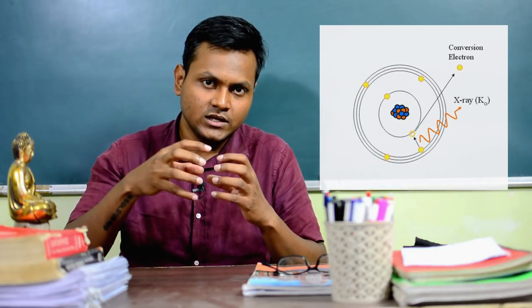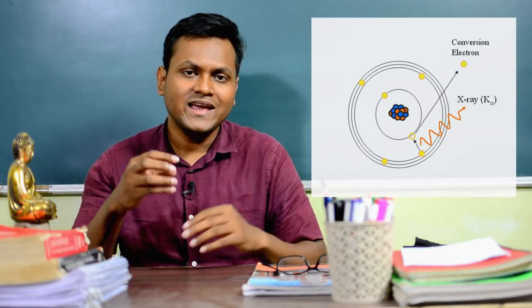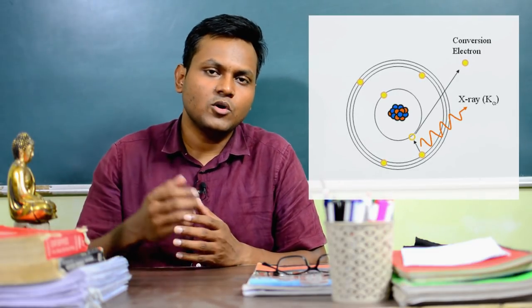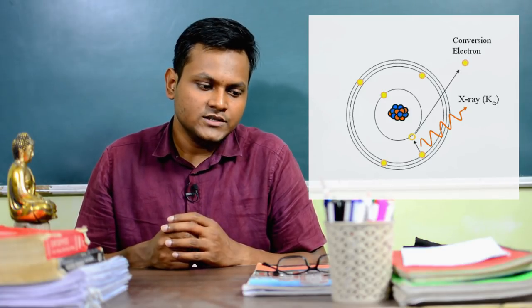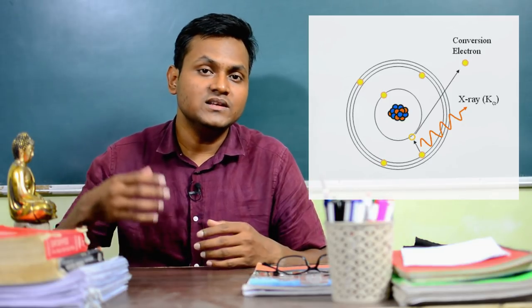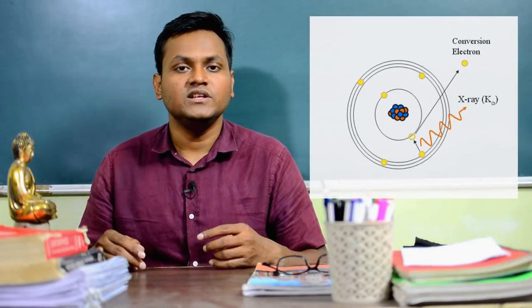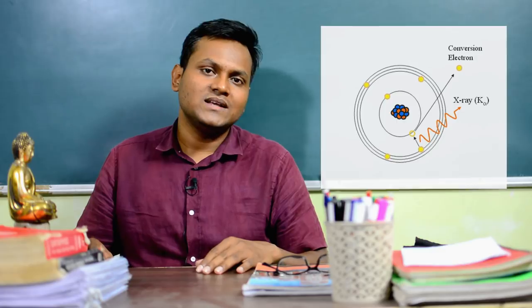Gamma decay is not the only process associated with nuclear energy level transitions — there are two others. The first is internal conversion, which happens when the energy released by a nucleus due to a nuclear energy transition is not emitted as a photon but instead is absorbed by a nearest neighboring electron in the atom. That electron absorbs the energy from the nucleon transition, is freed from the atomic energy level, and the excess energy goes off as the kinetic energy of the electron. So instead of a gamma photon, the atom releases an electron whose kinetic energy comes from the nuclear energy level transition.